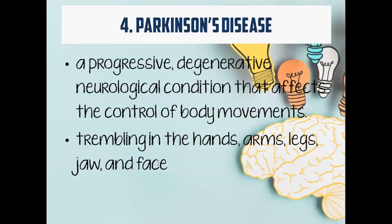We also have Parkinson's disease. It is a progressive degenerative neurological condition that affects the control of your body movements. You will have trembling in your hands, arms, legs, jaw, and face. You have stiff limbs or trunk, are very slow in moving, and have an unstable posture and difficulty in walking because you are trembling and shaking most of the time. It happens when the neurons that normally produce dopamine in the brain gradually die, which is why we do not have control of our movements.